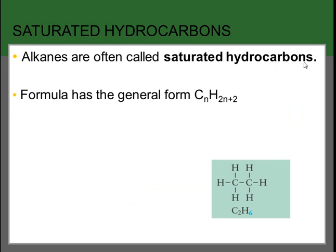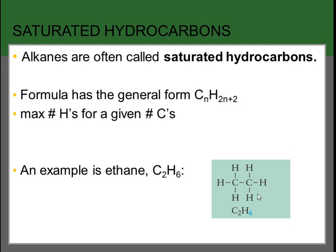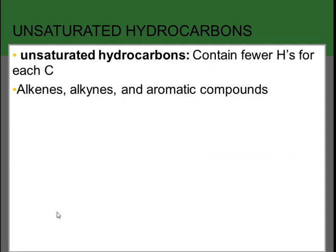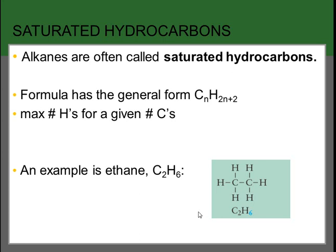Alkanes are often called saturated hydrocarbons — they have the most hydrogens possible for a given number of carbons. A saturated hydrocarbon has the general formula CnH2n+2. For example, ethane is C2H6: if n equals 2, then 2×2+2 equals 6 hydrogens. Unsaturated hydrocarbons contain fewer hydrogens for each carbon. For instance, C2H2 does not fit the formula 2n+2 and would be considered unsaturated. Alkenes, alkynes, and aromatic compounds all fall in the class of unsaturated hydrocarbons.